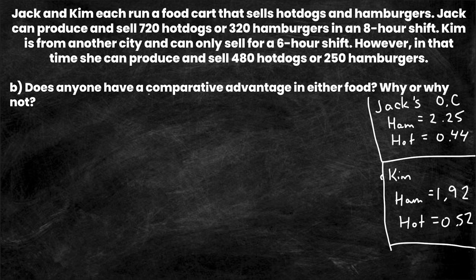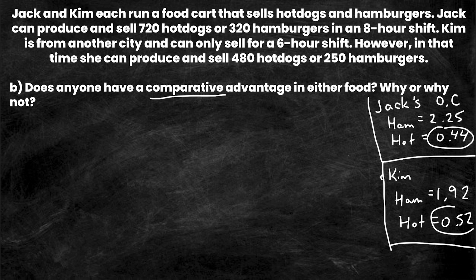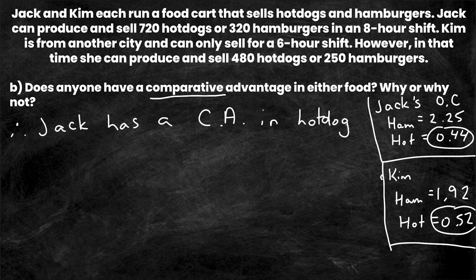Moving to question B: does anybody have a comparative advantage? Comparative advantage is found by comparing whose opportunity cost is lower — the person with the lower opportunity cost has the comparative advantage. For hot dogs, Jack's opportunity cost is 0.44 compared to Kim's 0.52, so Jack has a comparative advantage in hot dogs because his opportunity cost is lower.